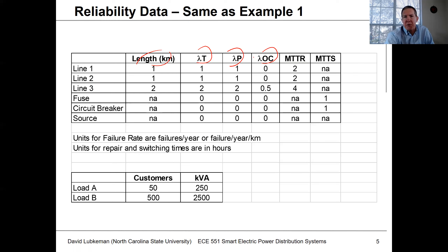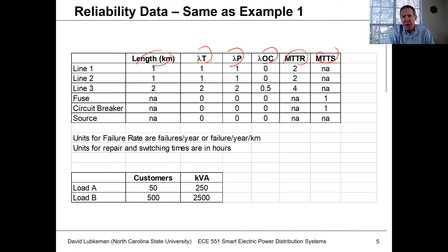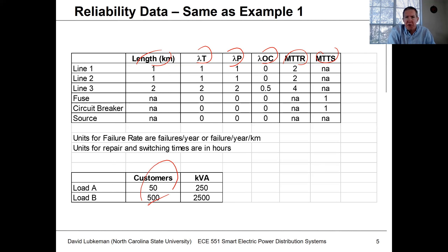We have a probability of an open circuit failure — this doesn't cause a fault but results in an outage — and then a mean time to repair the fault and a mean time to switch for a crew to operate the upstream switch. We'll have this statistical information for all elements in the circuit, focusing on elements most likely to fail like overhead line or cable failures. We also need customer counts because our indices are weighted by the number of customers at various locations.